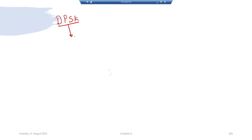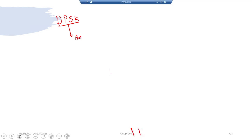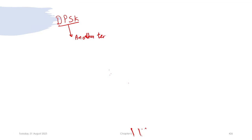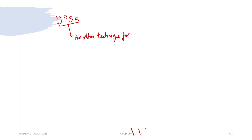In this lecture, we will quickly discuss another technique for non-coherent detection — this is differential phase shift keying (DPSK).